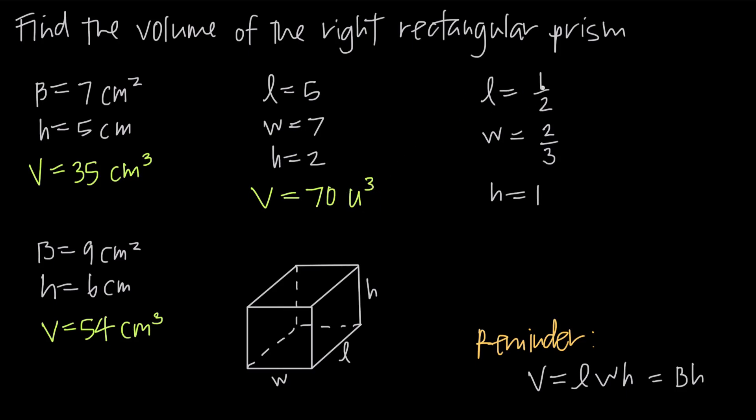If I look at the last example, I'm told that the length is 1 half, the width is 2 thirds, and the height is 1. Again, I just want to multiply all three of those together, so I'm going to say 1 half times 2 thirds times 1.